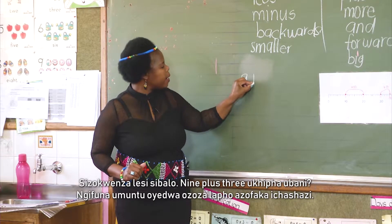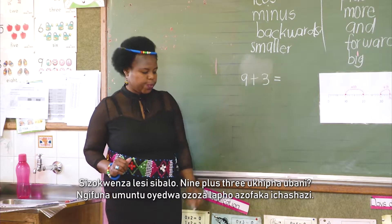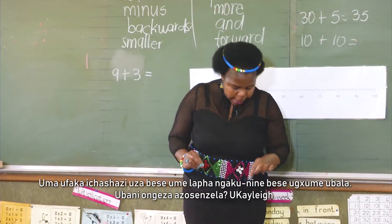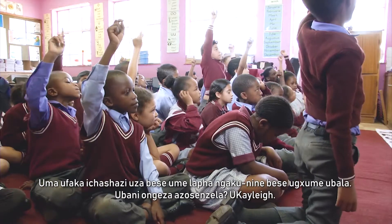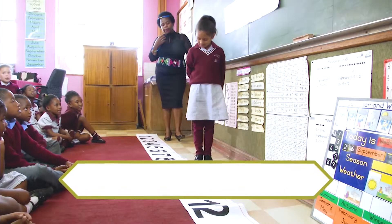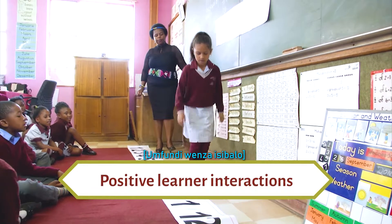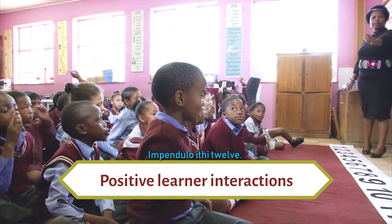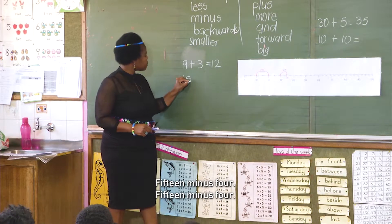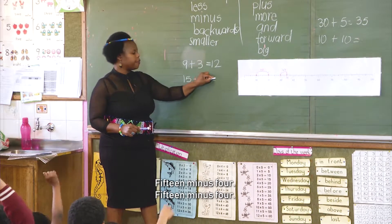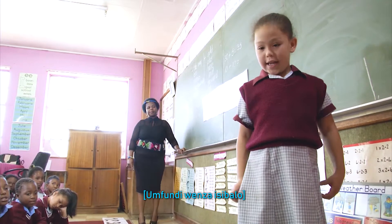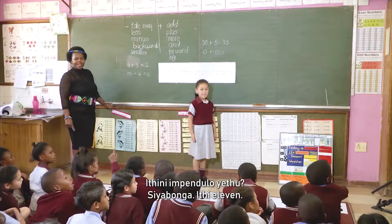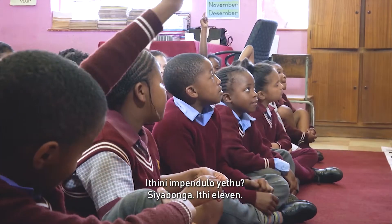We are going to do this sum: nine plus three equals? I want one person to come and plot. When you plot you come and stand by nine, then make hops counting forward. I am standing on nine and I am going to jump three jumps — one, two, three. What is the answer, class? Twelve. The answer is twelve. Fifteen minus four — I am standing on fifteen and jumping backwards — one, two, three, four. What is our answer? Eleven. It is eleven.